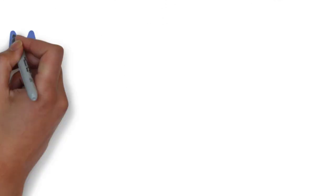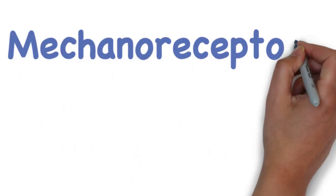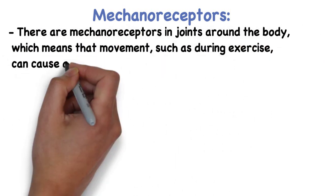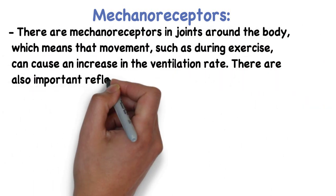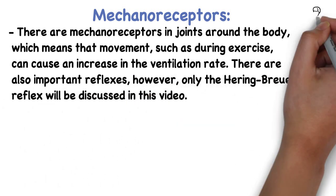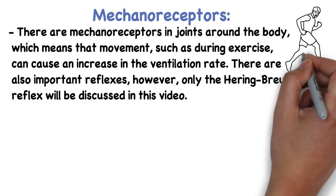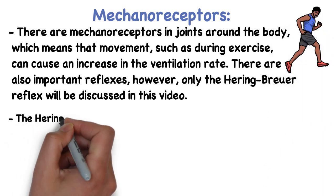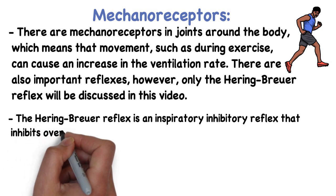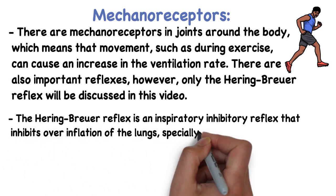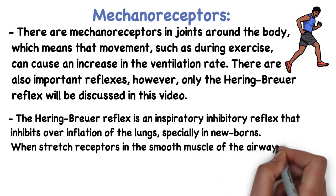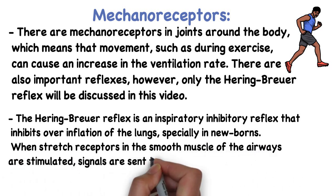There are mechanoreceptors in joints around the body, which means that movement — such as during exercise — can cause an increase in the ventilation rate. There are also important reflexes; however, only the Hering-Breuer reflex will be discussed in this video. The Hering-Breuer reflex is an inspiratory reflex that inhibits overinflation of the lungs, especially in newborns. When stretch receptors in the smooth muscles of the airways are stimulated, signals are sent to the brain and cause forced expirations.